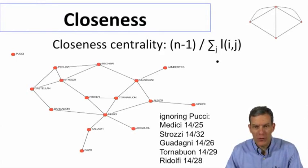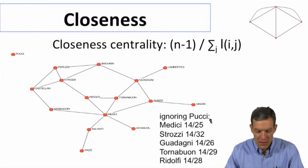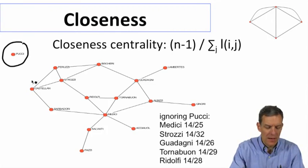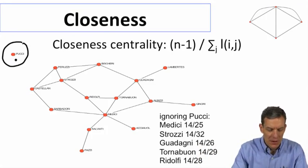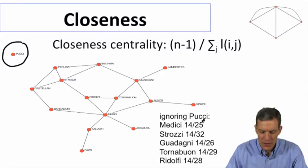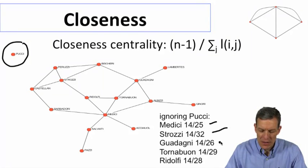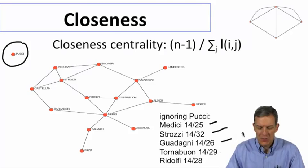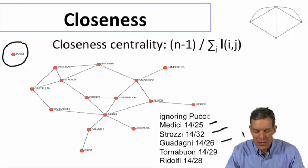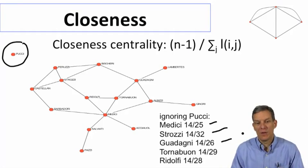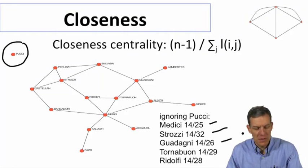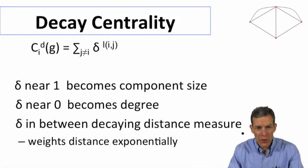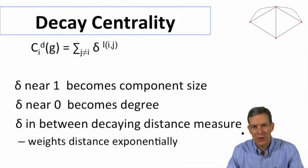When we look at closeness centrality in the Medici data — ignoring the Pucci, because adding them with infinite distance would make everyone's closeness centrality zero — the Medici score 14 out of 25, Strozzi 14 out of 32, and Guadagni 14 out of 26. Closeness centrality gives us some differentiation between families. It doesn't sort things enormously, but gives us a feeling for who's further and who's closer.